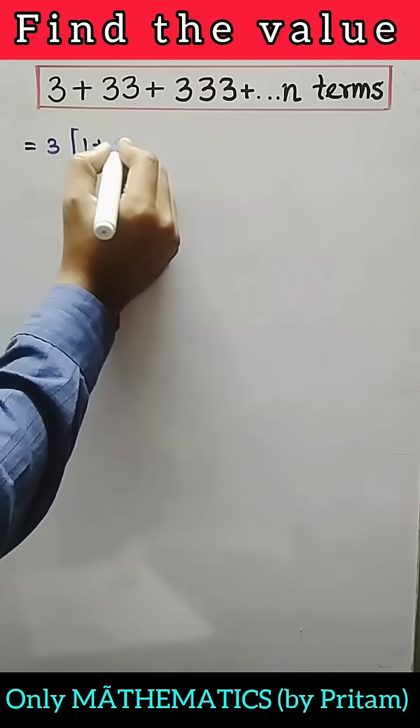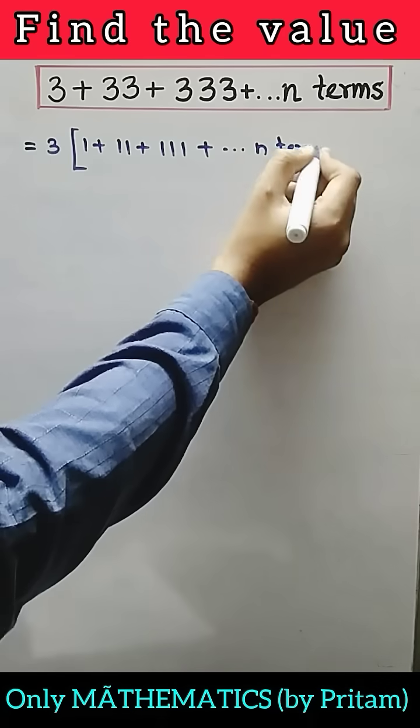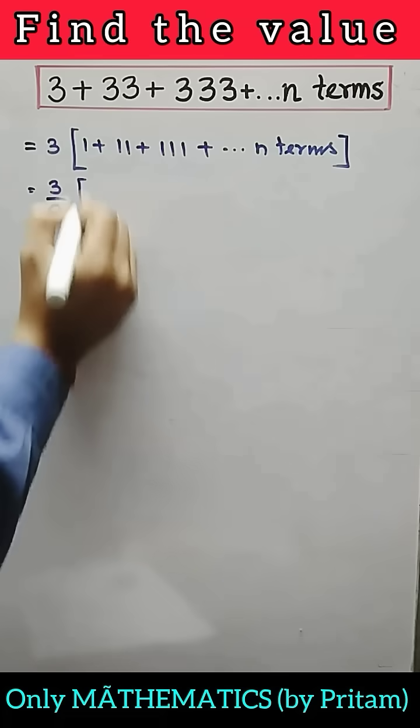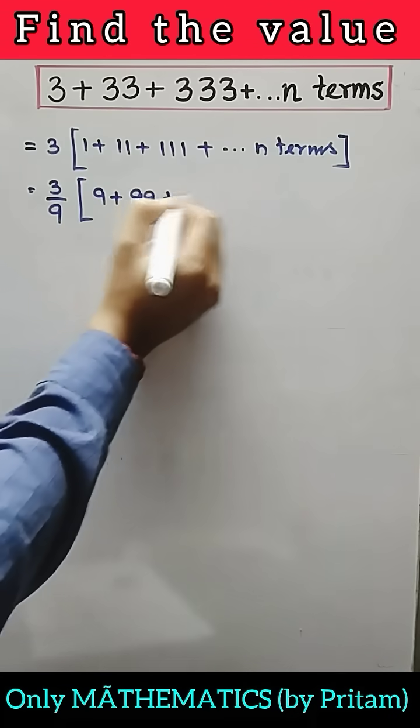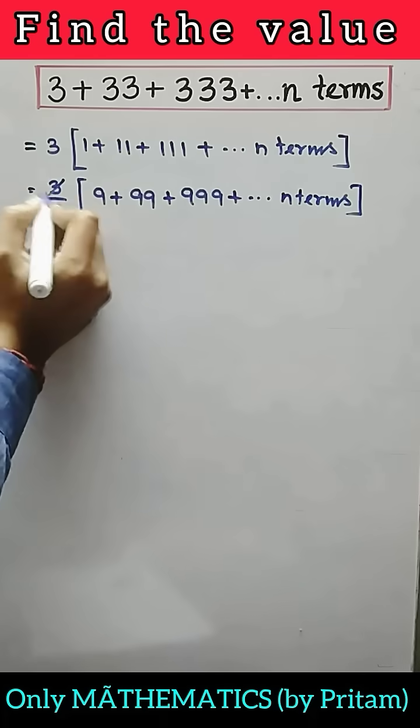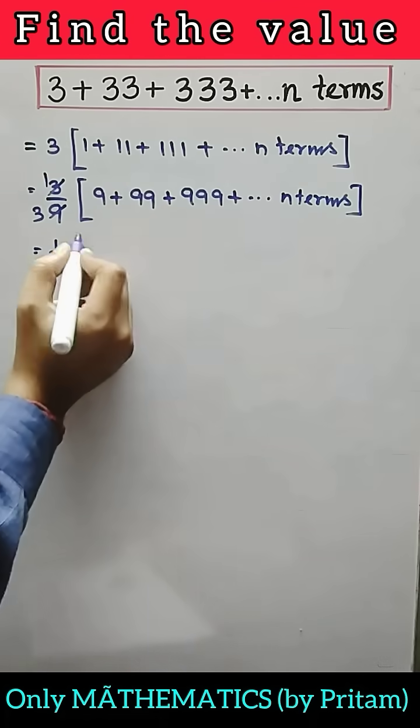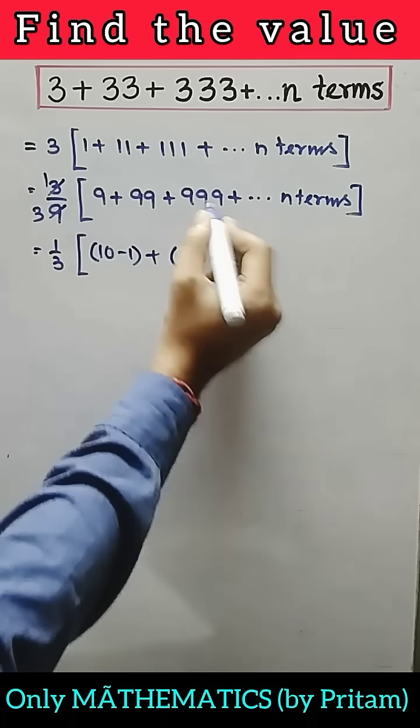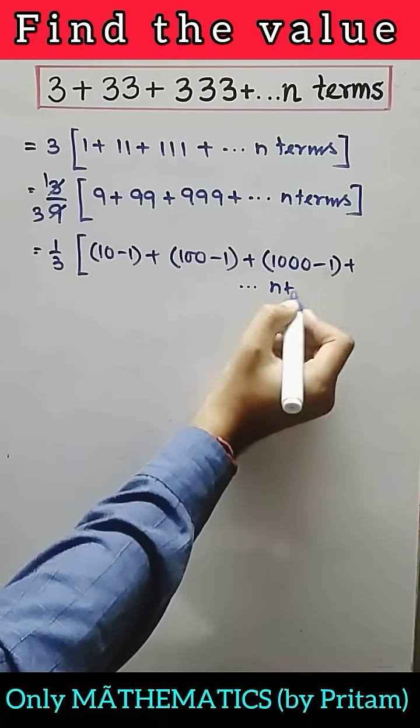So first of all, from this series take 3 as common. Now write 3 by 9 and multiply it every time of this series by 9. Now 3 by 9 will be 1 by 3, and 9 can be written as 10 minus 1, 99 can be 100 minus 1, and this one will be 1000 minus 1.